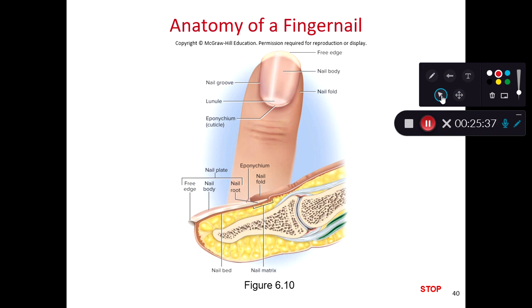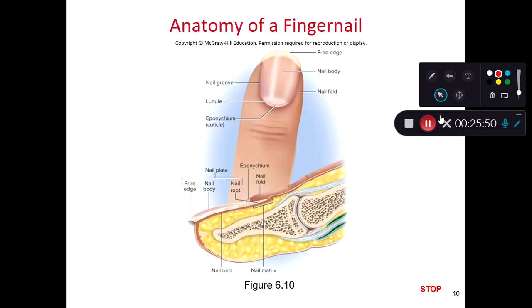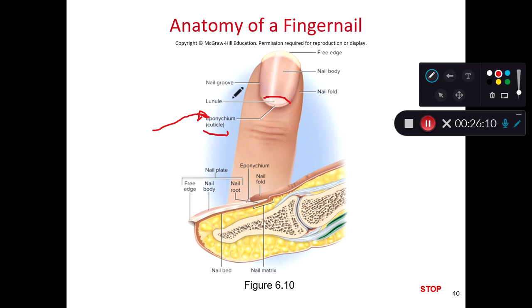The nail root is formally defined as the part of the nail plate that goes under your skin, and the nail body is the part you can see. We also have the eponychium — a fun word to say and hard to spell — which is the technical name for the nail cuticle. And that whitish part of the nail body right next to the nail root is called the lunule — where keratin is still in the process of solidifying and hardening.